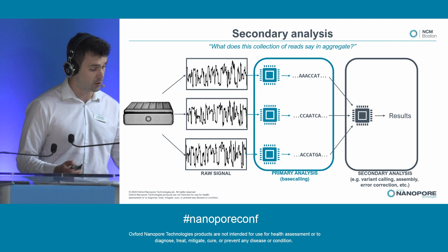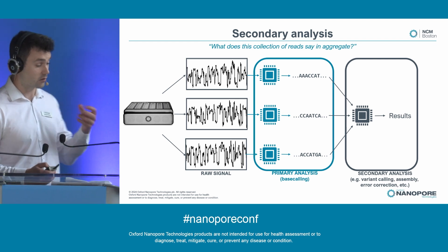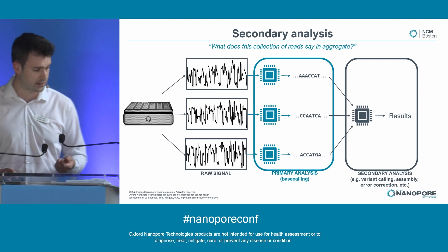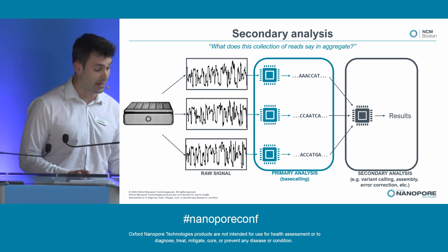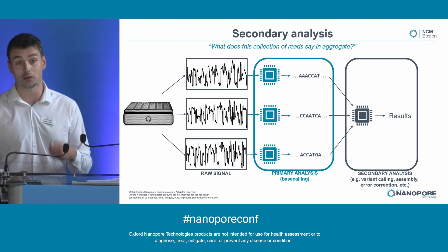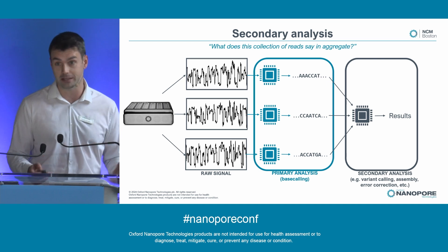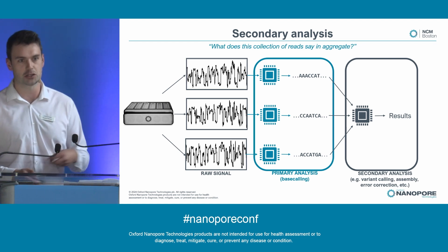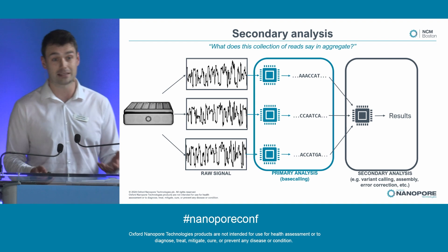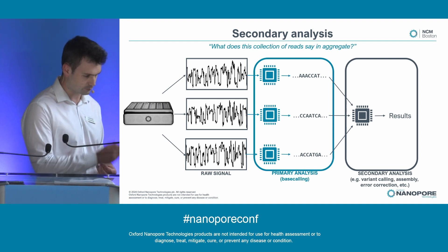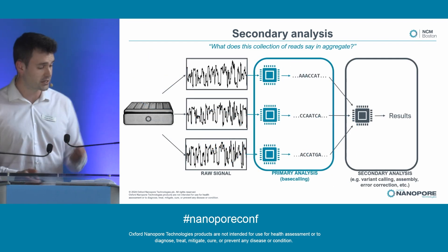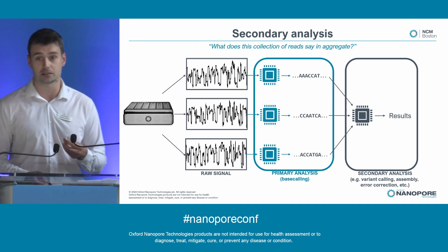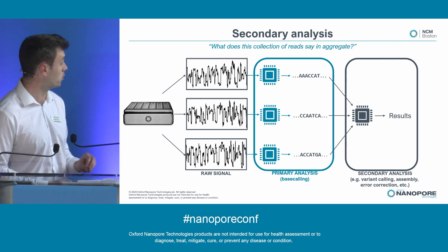When we do sequencing, we usually have a process that looks something like this. We get raw signals from the device, and we hand these one by one to the base calling model. The job of that model is to predict what bases were in the pore at the time the signal was measured. We're not concerned about what any one read says in isolation, but rather what a group of reads says as an ensemble. So we have a downstream model or algorithm that takes those base-called reads and tries to produce useful insight about our sample - for example, how it differs from a known reference sequence in variant calling. We've spent a lot of time improving our base calling models, which feeds through to secondary analysis performance, but we haven't spoken as much about optimizing the models in that second panel. That's what today's talk is all about.